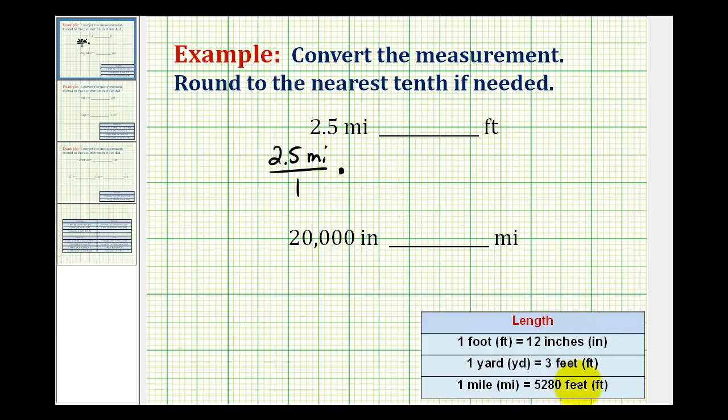We do have a direct conversion from miles to feet. Since we want miles to simplify out, we're going to put miles in the denominator and feet in the numerator. The conversion is 1 mile equals 5,280 feet.